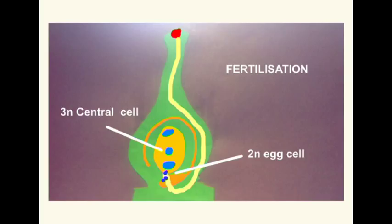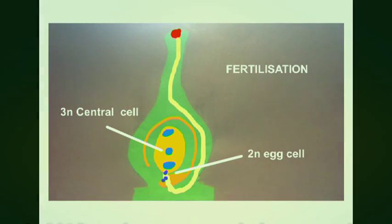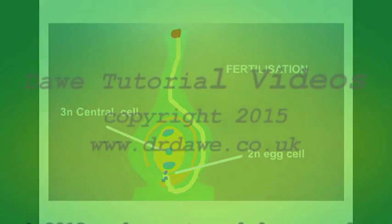On fertilization, a diploid egg cell is produced as well as a triploid central cell. The egg cell will provide the embryo for the plant, and the central cell will provide nutrition for that embryo.